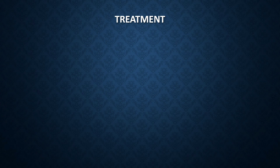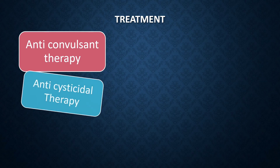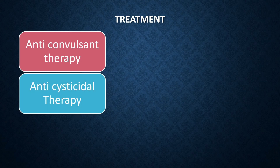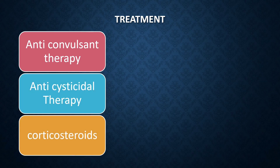To treat a case of neurocysticercosis, we have to give three therapies. The first one is anti-convulsant therapy because the patient presents with convulsions. The second one is anti-cysticidal therapy, and the third one is corticosteroids.